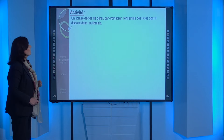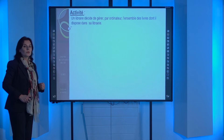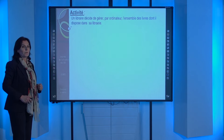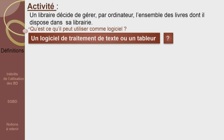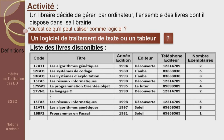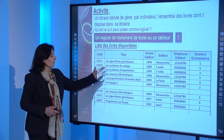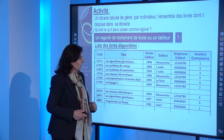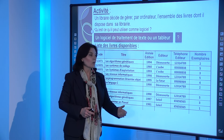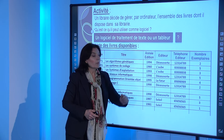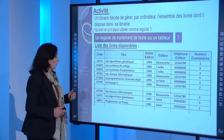Un libraire décide de gérer par ordinateur l'ensemble des livres dont il dispose dans sa librairie. Quel logiciel lui recommandez-vous ? Un logiciel de traitement de texte ou un tableur ? L'un de ces logiciels va lui permettre de dresser une liste contenant dans chaque ligne le code du livre, le titre, l'année de son édition, l'éditeur, le téléphone de l'éditeur et le nombre d'exemplaires de l'édition.